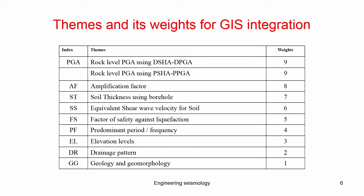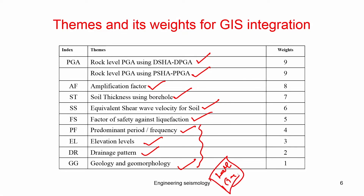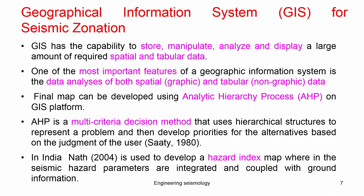We will estimate direct hazard in deterministic and probabilistic forms, then amplification, soil thickness, soil stiffness, liquefaction factor, predominant frequency, elevation level, drainage factor, and topography. All these clubbed together represent site effect or amplification. Landslide hazard and tsunami are not included for Bangalore since landslide and tsunami are not possible there, and so those themes and weights are not needed for this case study.